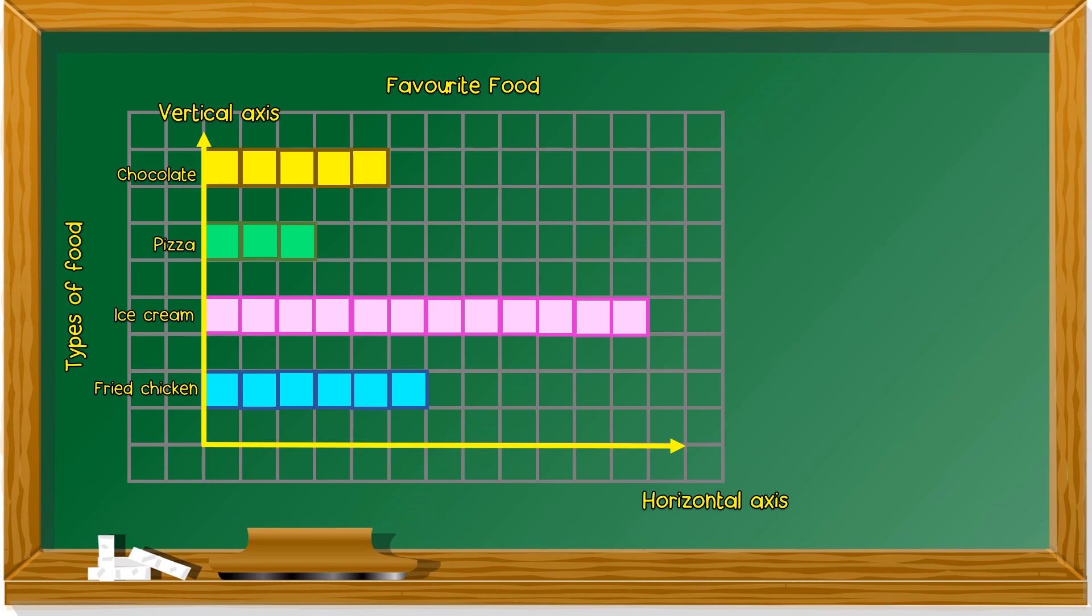We get this. So at the side is the type of food. What's missing from this bar chart? The number of pupils. So you need to draw these lines and put the numbers.